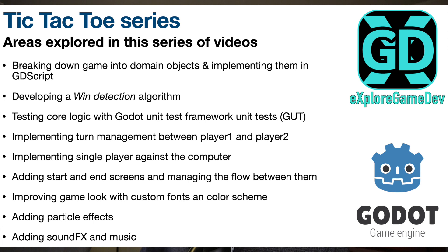The elements we'll cover are summarized here, including breaking down the game domain objects and implementing those into GDScript, utilizing unit tests using the GUT framework, turn management with player 1 and player 2, adding start and end screens as you would expect, and we'll even get into particle effects, sound effects, and music.